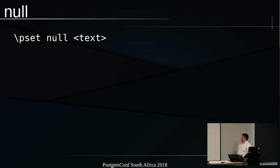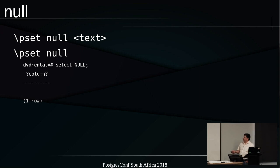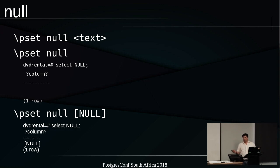Null values are a tricky one on the command line — by default you don't always know whether something is null or just an empty space. So you can set the value you want displayed when there's a null value. I put it in square brackets; other people use angle brackets — you'll see a lot of examples on the internet.